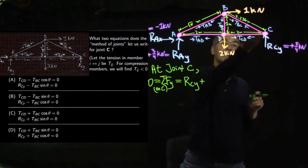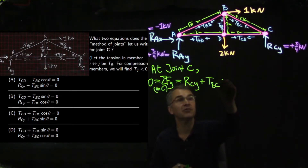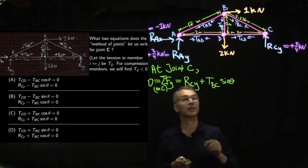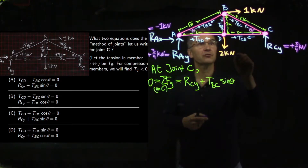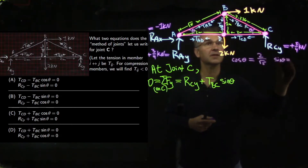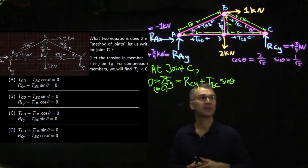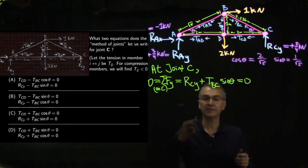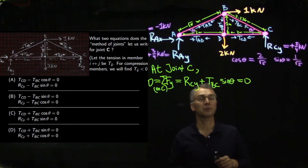For this triangle it's a 1, 2, root-5 triangle — the hypotenuse is root 5, vertical is 1, horizontal is 2. So cosine theta is 2 over root 5, and sine theta is 1 over root 5. This equation lets us solve directly for T-BC because we know sine theta and R-C-Y. T-BC equals minus R-C-Y over sine theta, which is minus root 5 times 5/4 kilonewtons.